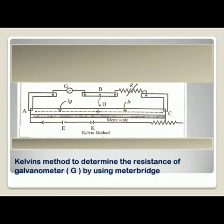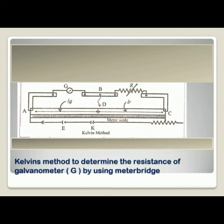The last concept of Part 1 is Kelvin's method to determine the resistance of a galvanometer G using a meter bridge. In the diagram, the galvanometer is shifted from the central strip to the left-hand side, with LX now written as LG, while the known resistance remains in the right gap with length LR. This particular method is called Kelvin's method. The galvanometer whose resistance G is to be determined is connected in the gap where the unknown resistance was previously placed.